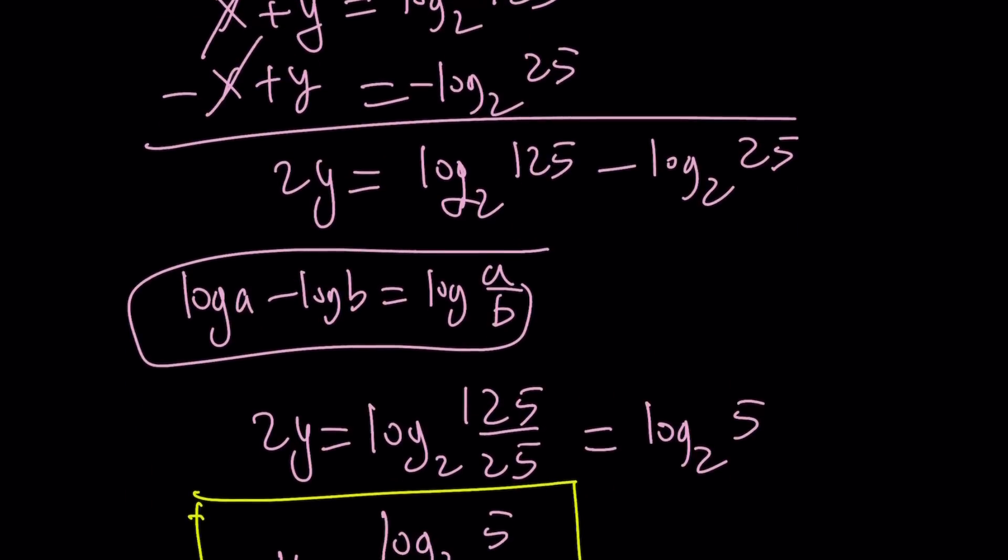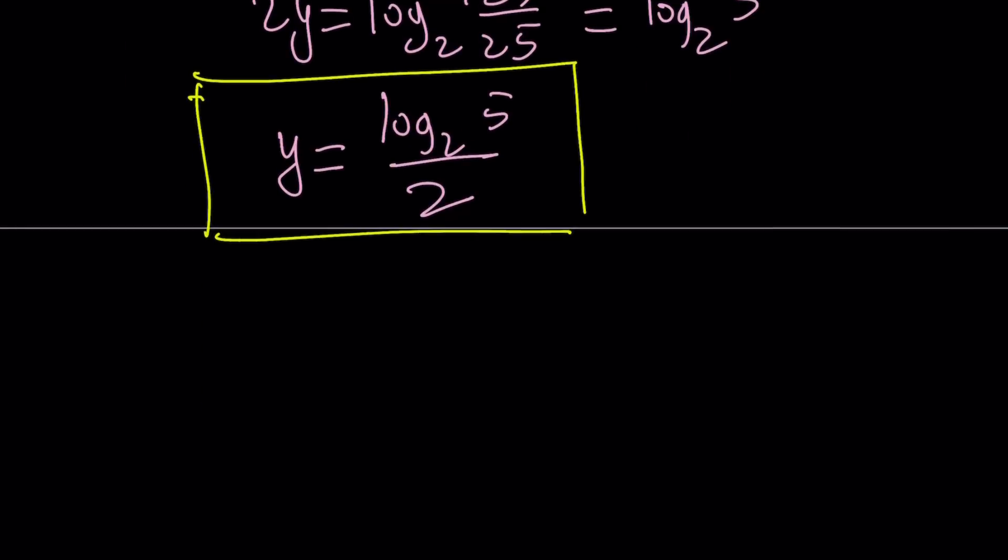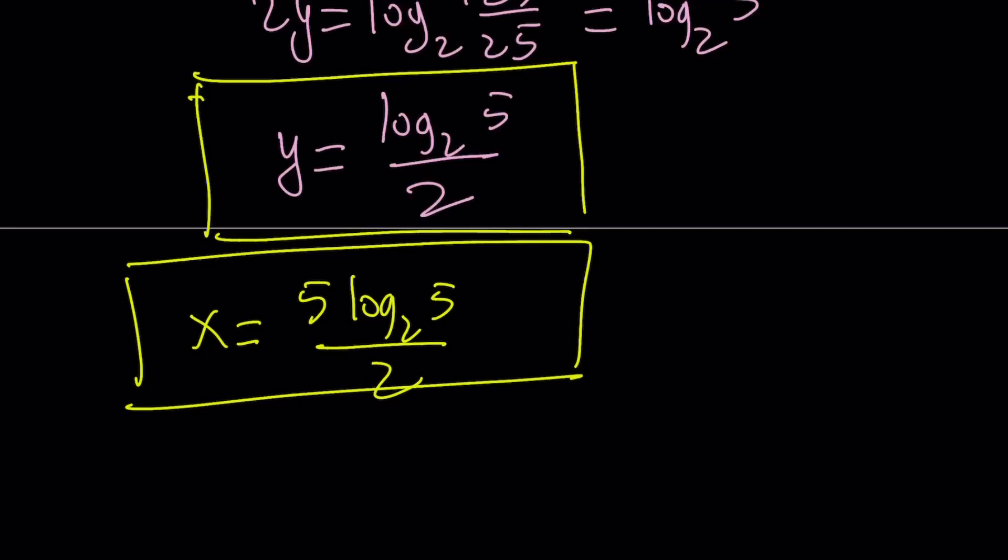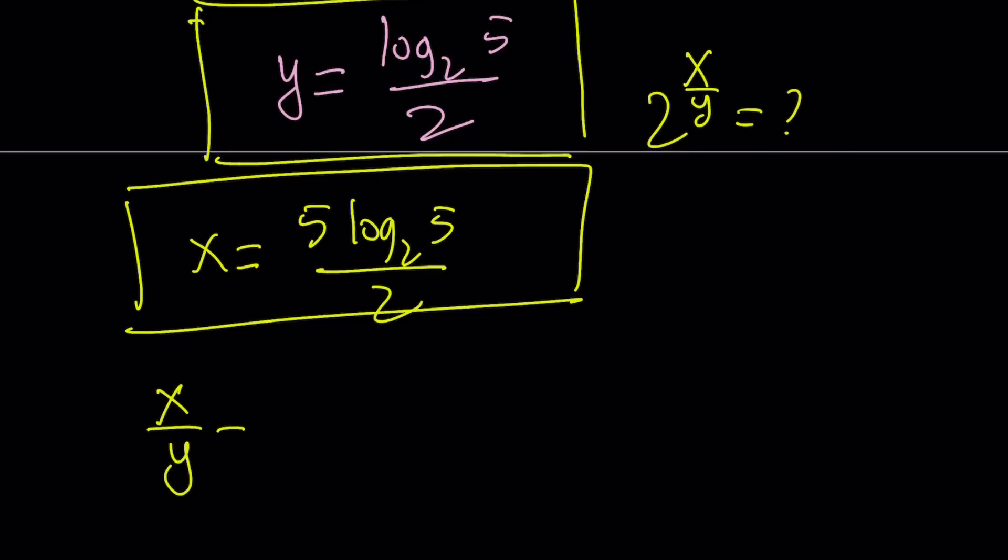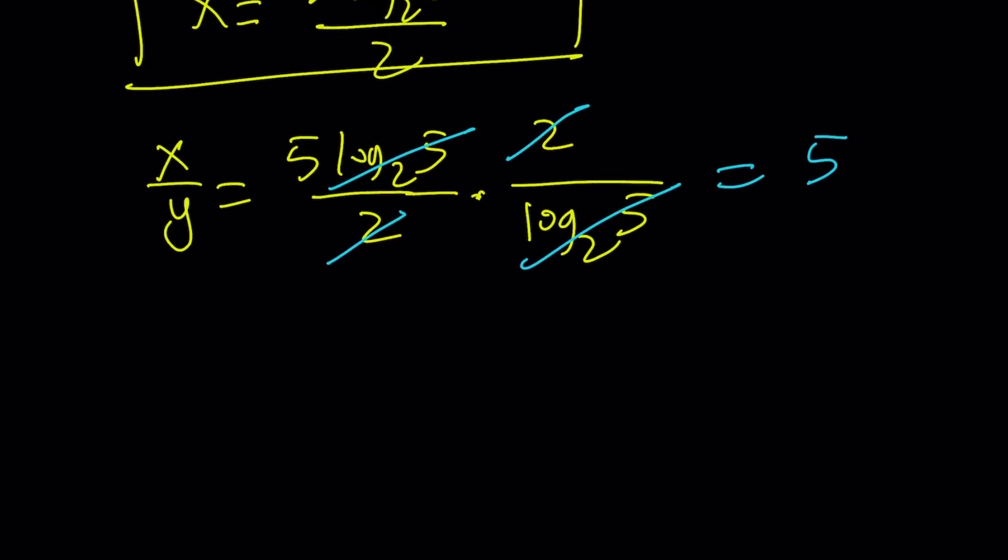That is the value of y and that is the value of x. What do I need to do? x was 5 log 5 divided by 2. I'm supposed to evaluate 2 to the power x over y. I have to divide x by y. What is x over y? x over y is just going to be x, and then to divide by y, you can multiply by the reciprocal, which is 2 over log 5. And log 5 cancels out, leaving us with 5. So x over y is 5 and 2 to the power of x over y is 2 to the power of 5, which is equal to 32.